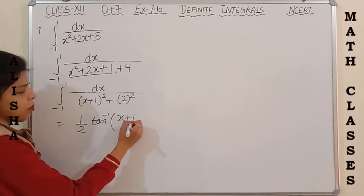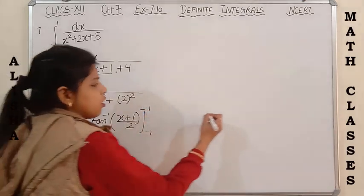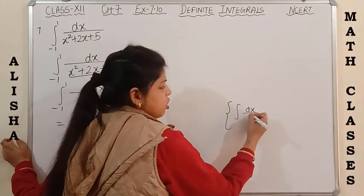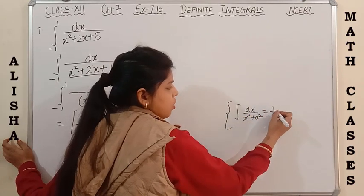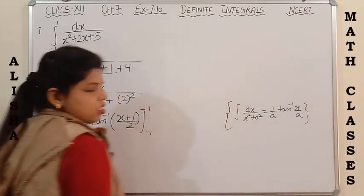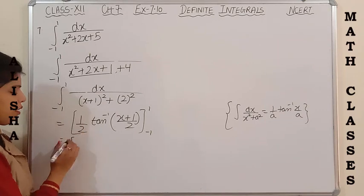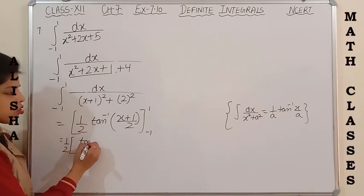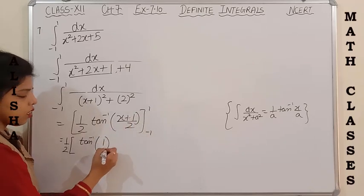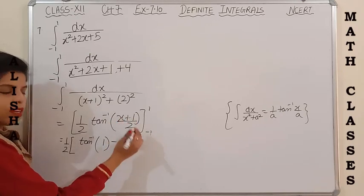The formula for integration of dx/(x² + a²) is (1/a) tan⁻¹(x/a). We have done this formula in particular type of functions. Here a = 2, so it becomes (1/2) tan⁻¹((x+1)/2) with limits -1 to 1. Putting upper limit x = 1: (1+1)/2 = 1, and lower limit x = -1: (-1+1)/2 = 0.